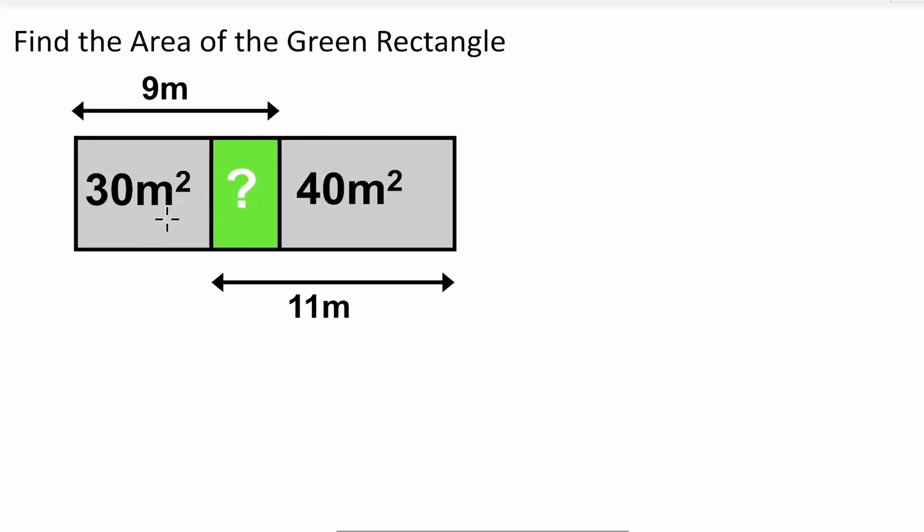To the left of it, we have a rectangle with an area of 30 meters squared. And to the right of it, another rectangle that has an area of 40 meters squared. As you can see, these two lengths together make 9 meters, and these two lengths together make 11 meters.